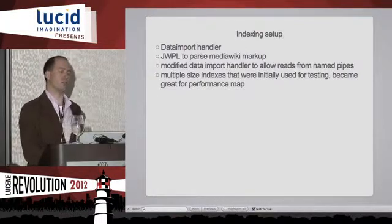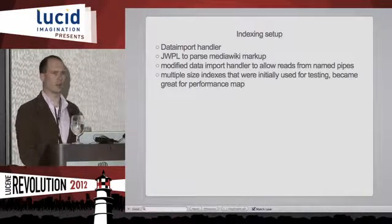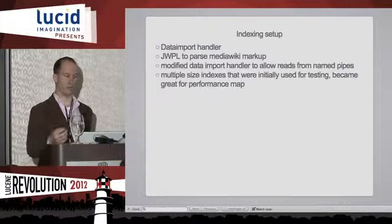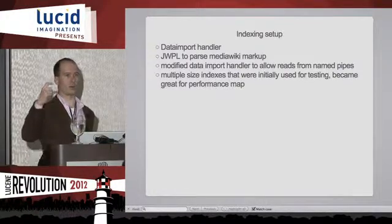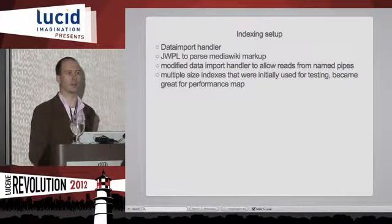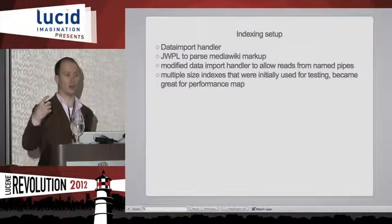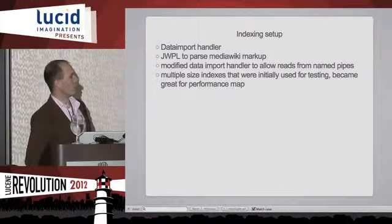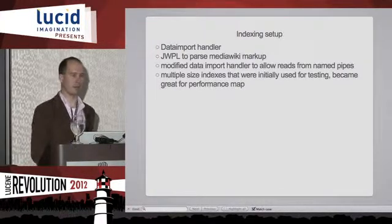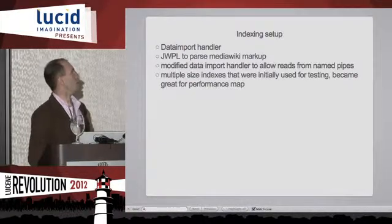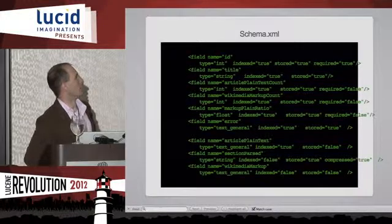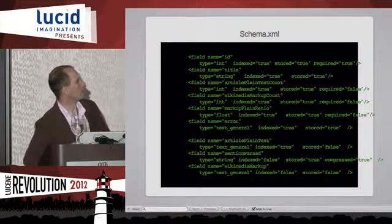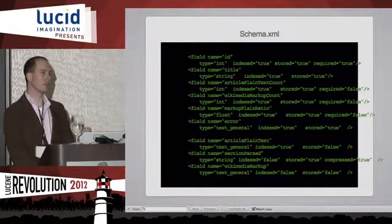There's a library called the Java Wikipedia Parsing Library (JWPL). I use that along with a custom transformer and the data import handler to parse those XML documents — parse the fields into plain text — and then you can split it out by section of a Wikipedia article. That allows you to set up multiple-sized indexes: 1K, 10K, 100K, and full. Here is the schema.xml — it's fairly standard. Article plain text count and WikiMedia markup count come into play later; that's just a count of the number of characters in those fields, which is useful for debugging.